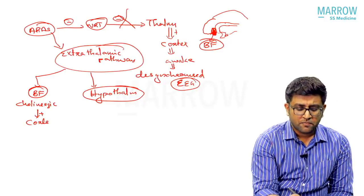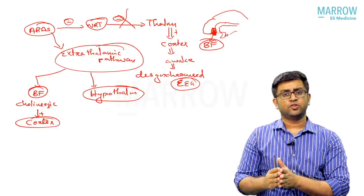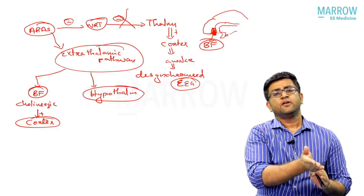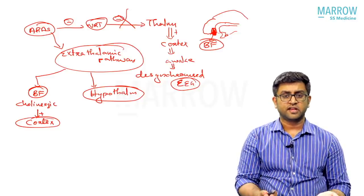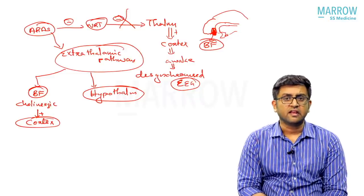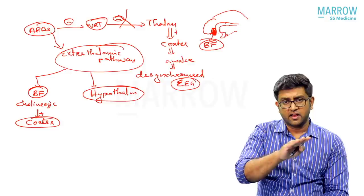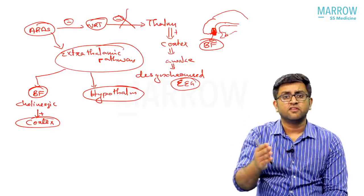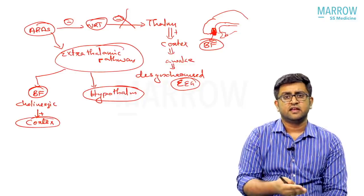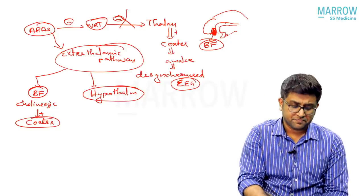Basal forebrain is activated by ARAS, and the cholinergic neurons of the basal forebrain activate the cortex, just like the thalamocortical pathway does. These cholinergic neurons of the basal forebrain are important in Alzheimer's disease and dementia — when they are damaged, cortical activation decreases, producing cognitive impairment, memory impairment, and dementia. That is why drugs that increase cholinergic activity, like donepezil and memantine, are used to increase cholinergic activity in these conditions.